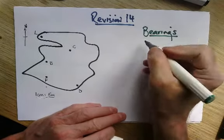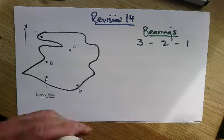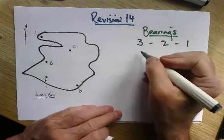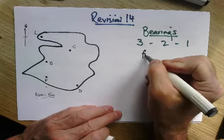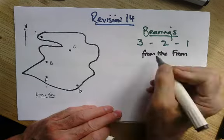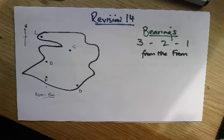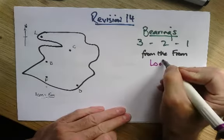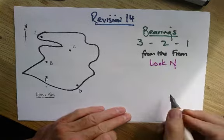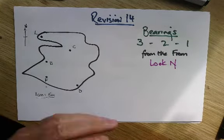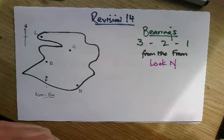The three stands for: you always got to go from the from - that's always important. The second one is, once you've done that, you look north. They give you a north scale like that.